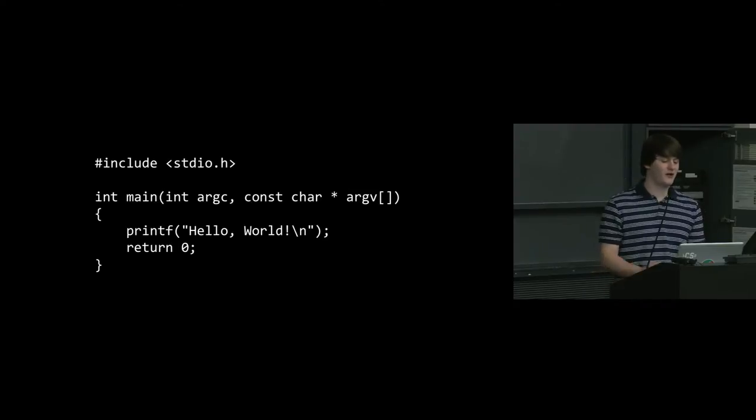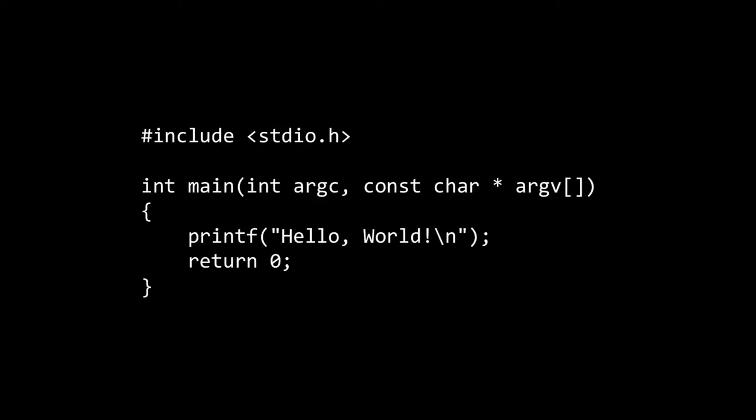What are int argc and const char* argv? Those are command line arguments. int argc is how many arguments were passed at the command line, and const char* argv are what those arguments were. And then we just printf. Once we get to Objective-C we're not going to really be using printf anymore, but it's a pretty standard program.